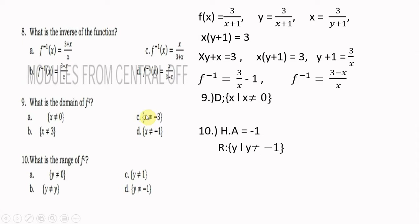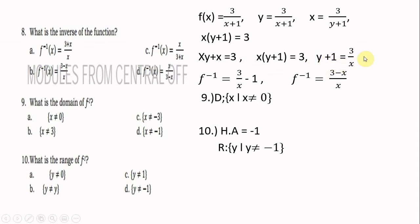To find the inverse of f(x) = 3/(x + 1), change f(x) to y: y = 3/(x + 1). Interchange x and y: x = 3/(y + 1). Cross multiply: x(y + 1) = 3, giving xy + x = 3. Factor: y + 1 = 3/x. Transpose 1: y = 3/x − 1, so the inverse is f⁻¹(x) = (3 − x)/x.